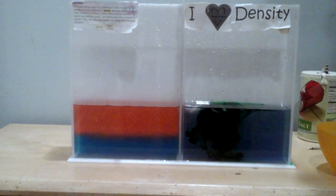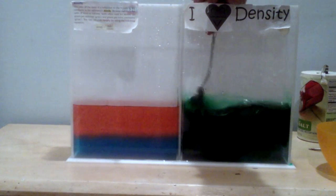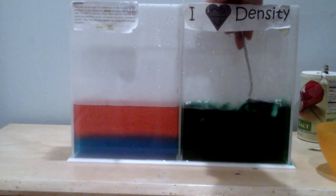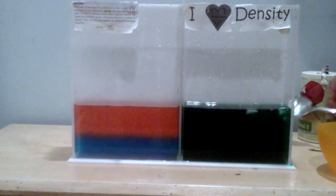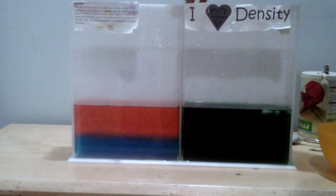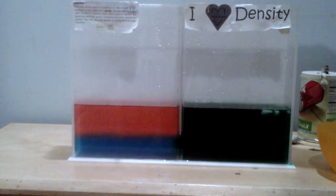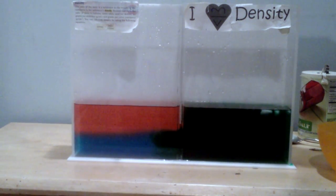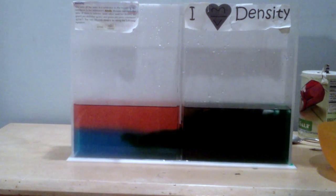And so if all goes well, it should flow in between because its temperature and density should be in between. And again, let's see if a convection current or some type of current is created. So there goes the green and you can see it is flowing in between those two.